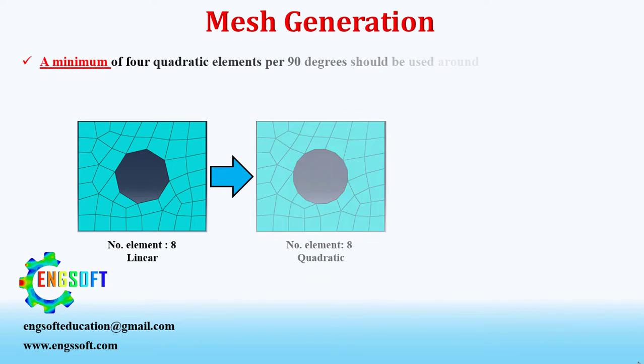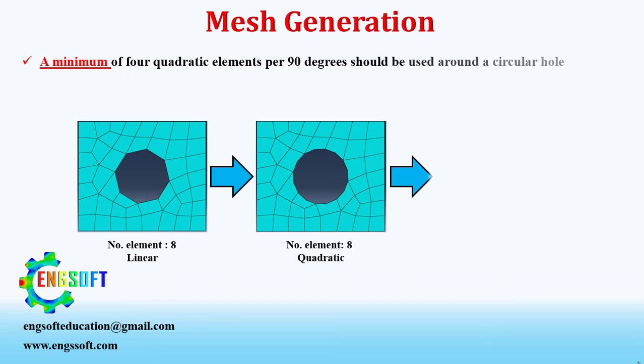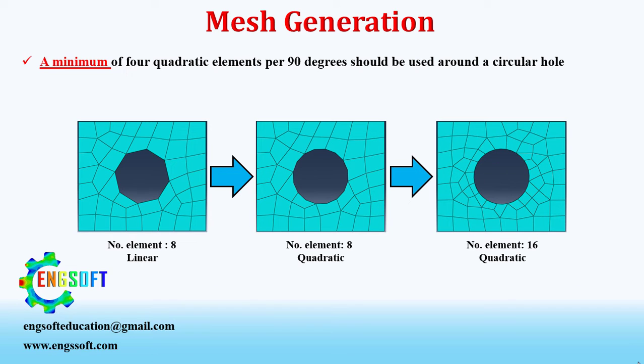As the second recommendation, a minimum of four quadratic elements per 90 degrees should be used around a circular hole.